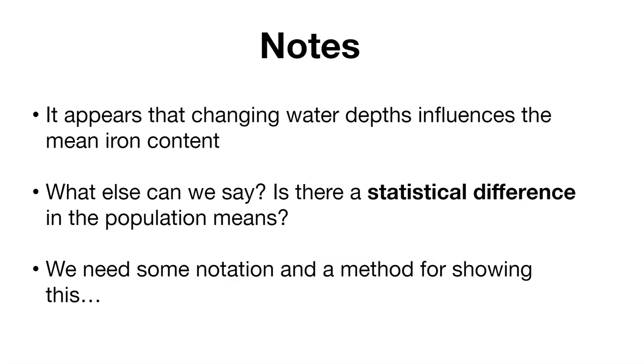To do this, we need some more notation. We really need a new method in statistics for doing this. The analysis of variance is going to allow us to examine the influence of multiple factors, such as the water depths, on a response variable of interest, the iron content.